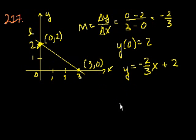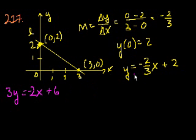That's not one of the choices. They've written it in a different form, the ax plus by equals c form. So let's get it there. Let's multiply both sides by 3. You get 3y equals minus 2x plus 6. Now let's add 2x to both sides. You get 2x plus 3y equals 6, which is choice B.